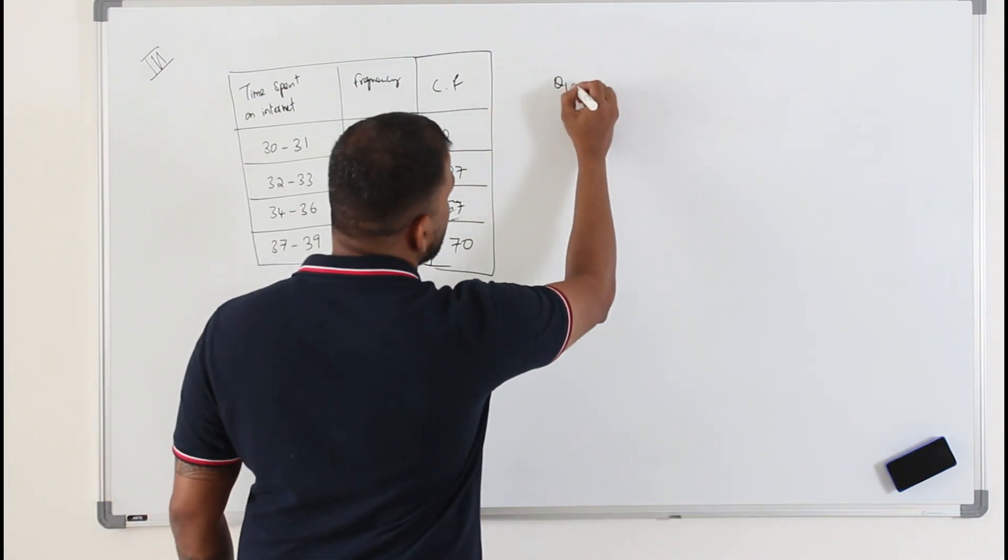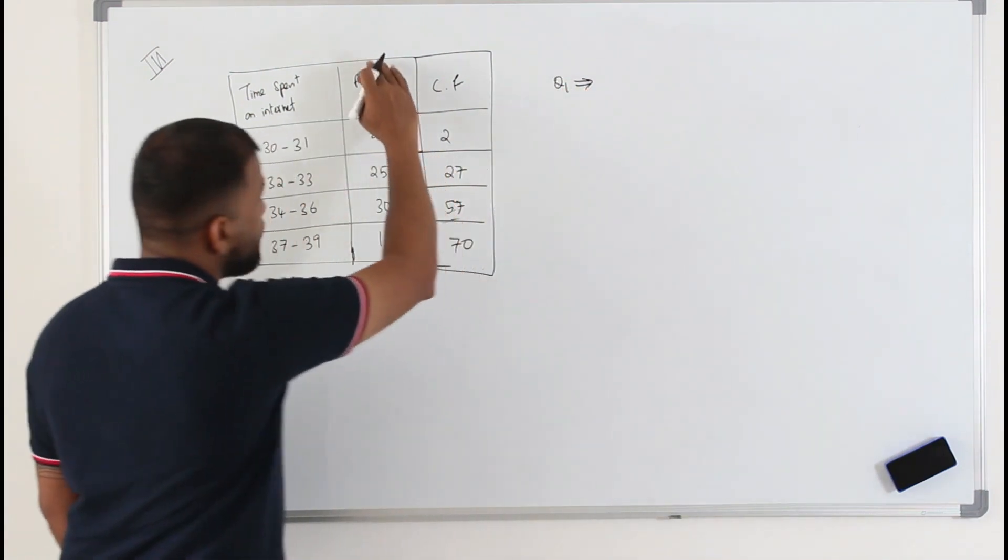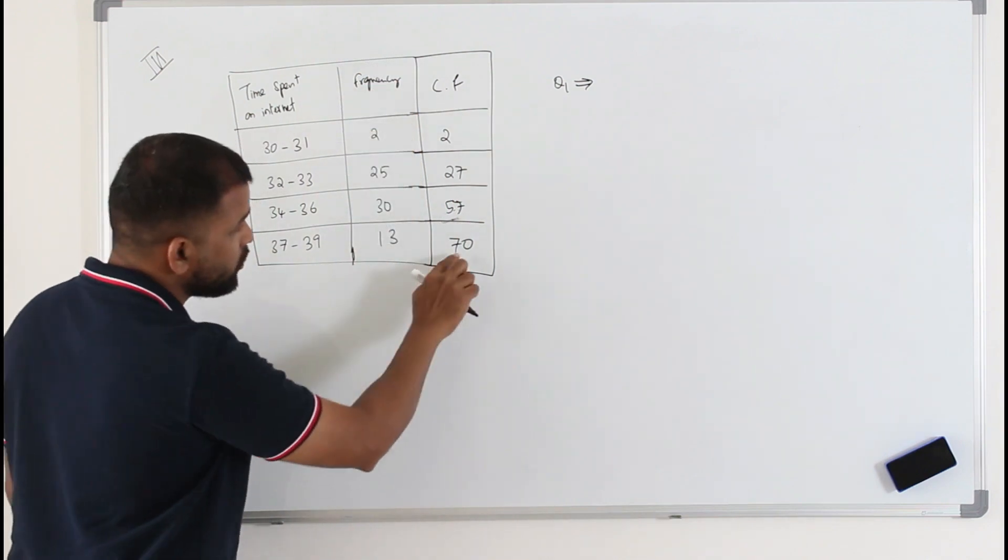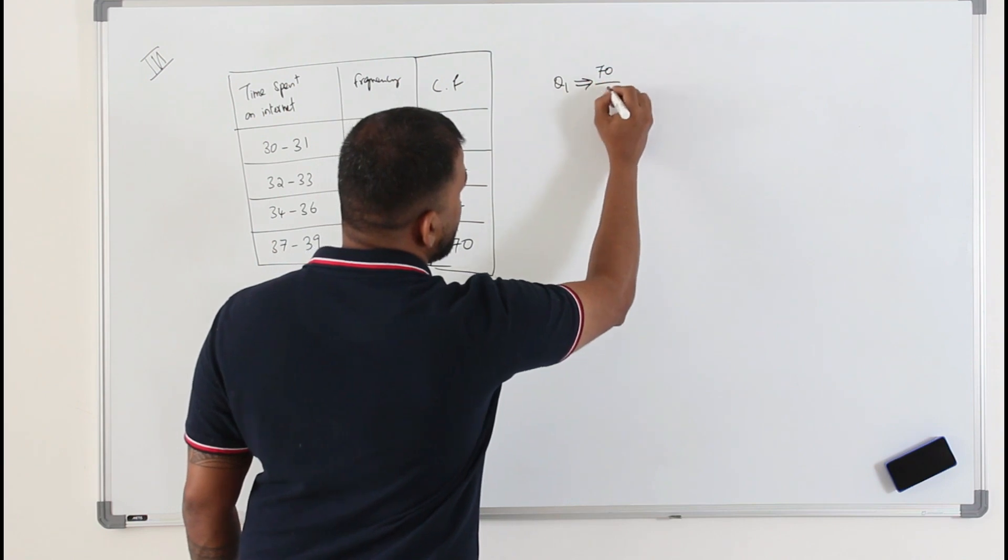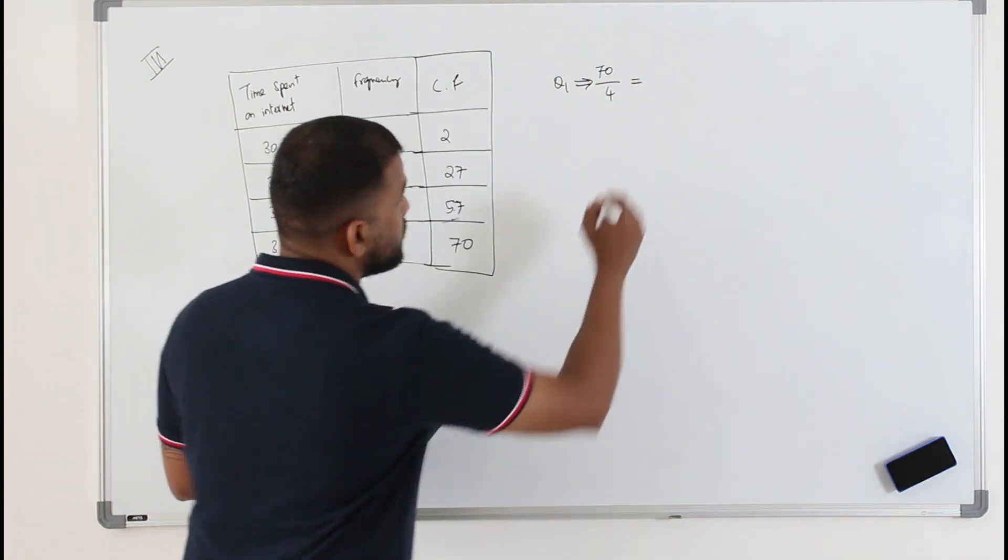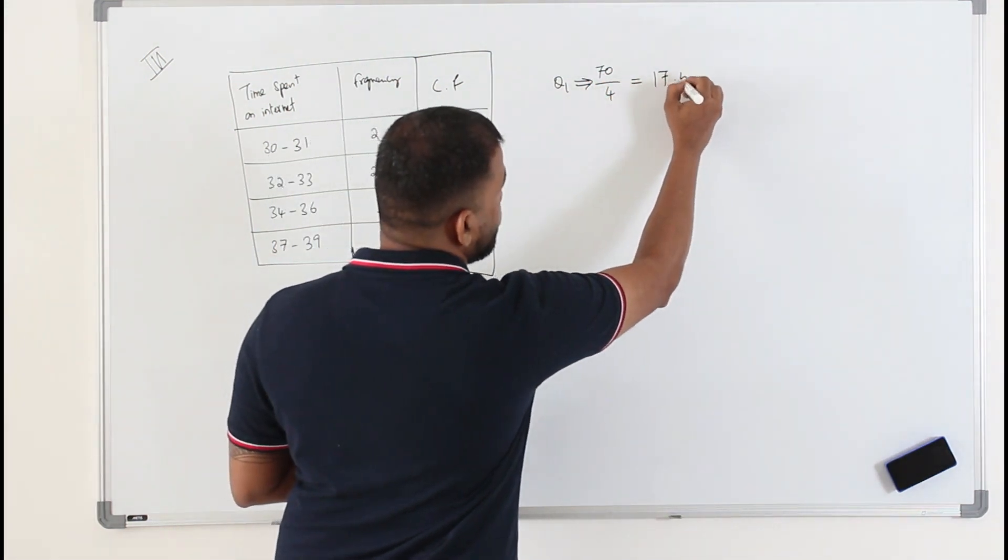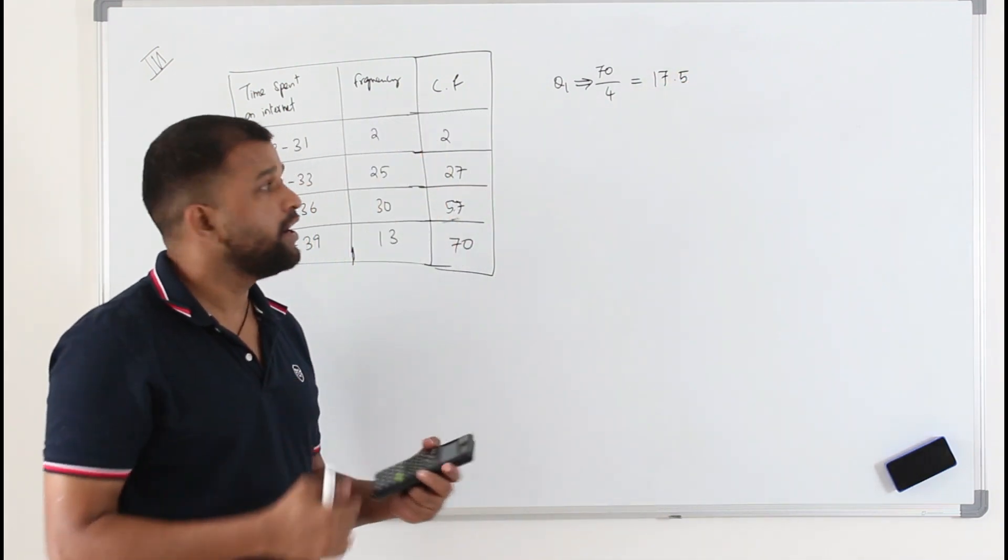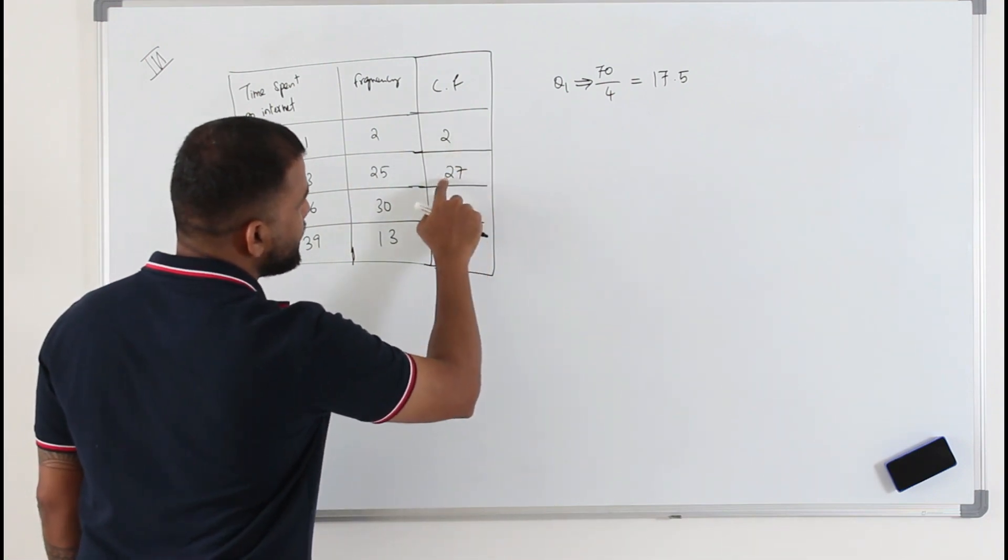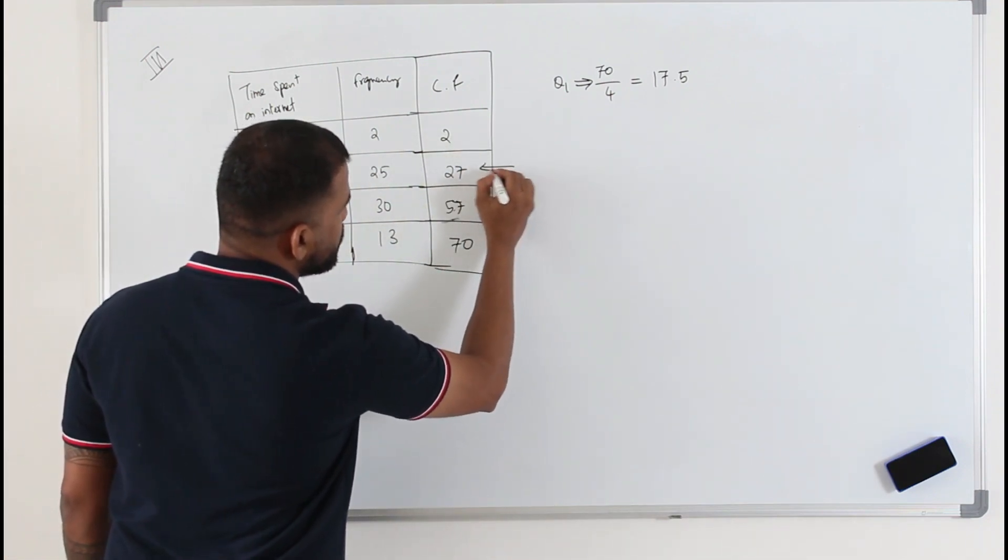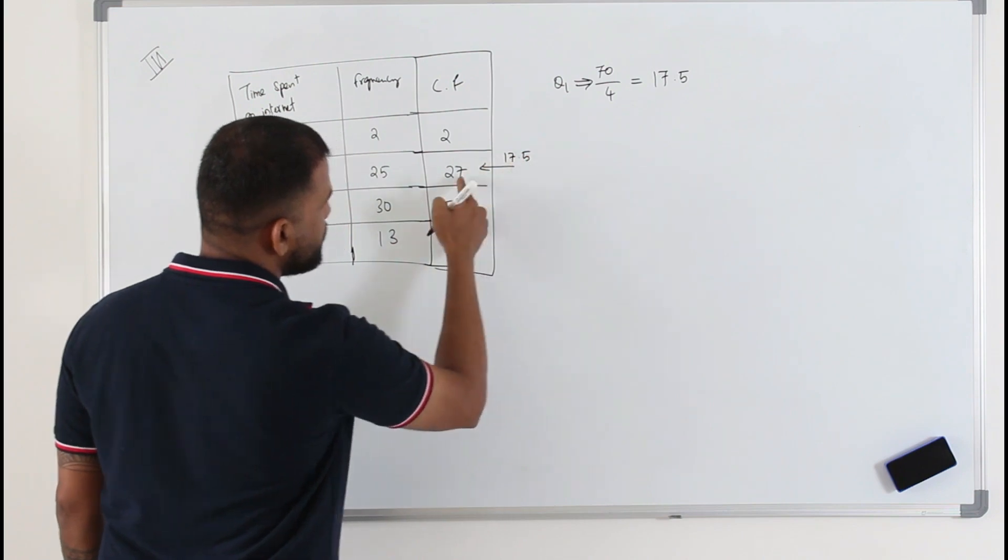So to find q1 you take the sum of the frequency which is going to be 70. I can just take this number, divide by 4, which is 17.5. Look at the cumulative frequency and check where the 17.5 lies. Anything more than 2 till 27 lies in here. So your 17.5 lies in here.